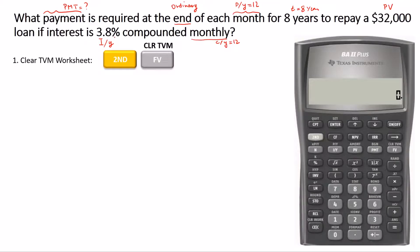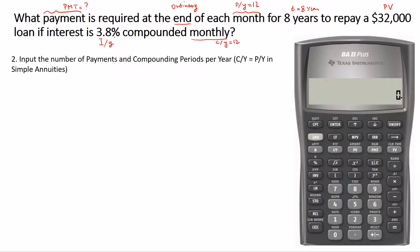First, let's enter the number of payments per year and the number of interest compounding periods per year. We need to go to the P/Y C/Y worksheet by pressing 2nd and then I/Y. Now P/Y is set to one, and if I use this down arrow key to go to C/Y, C/Y is set to one as well. You have to change these two to 12.